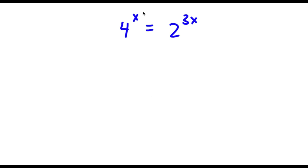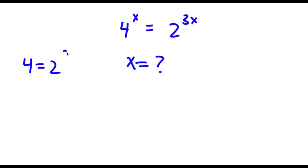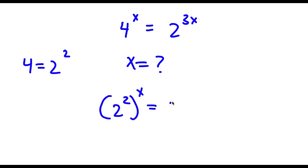I have 4 to the power of x is equal to 2 to the power of 3x. I want to find the value of x. Now, 4 is the same thing as 2 to the power of 2. So if I replace 4 with 2 to the power of 2, I get 2 to the power of 2 to the power of x is equal to 2 to the power of 3x.